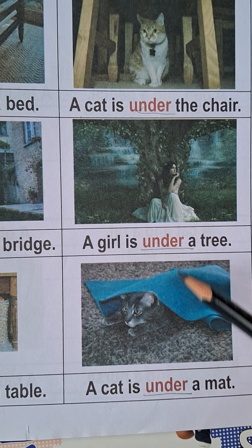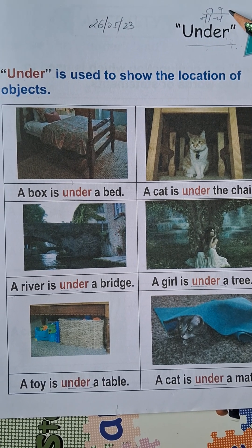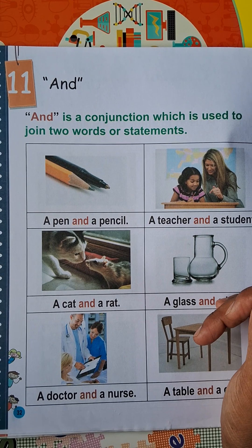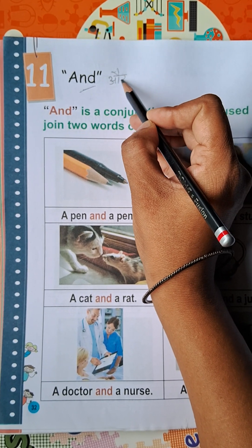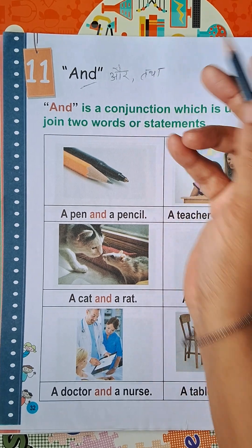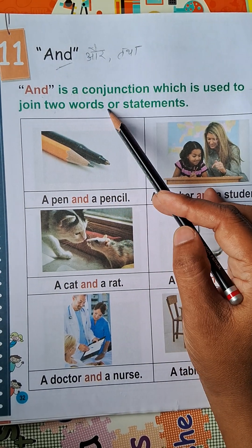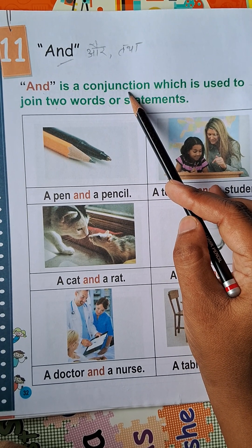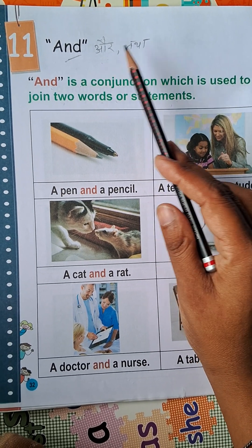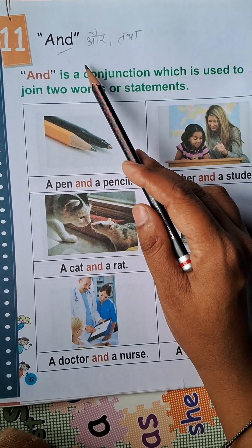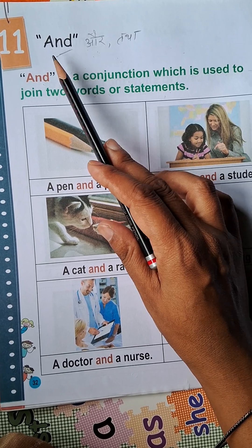So 'under' is a word which is used to show the location of objects. We will also learn the use of 'and'. And is a conjunction which is used to join two words or statements. For example, 'I and my brother went to the market yesterday' — here 'and' is used to join two words. The word we use to join in English is 'and'.